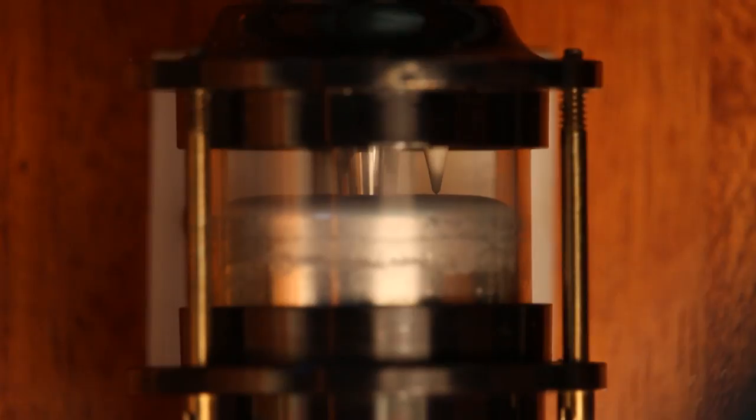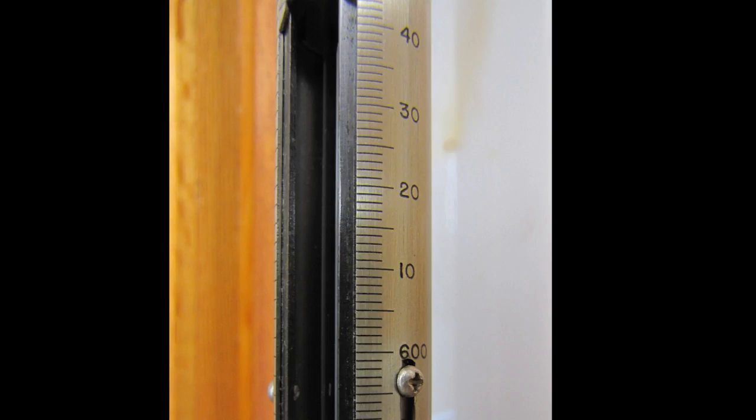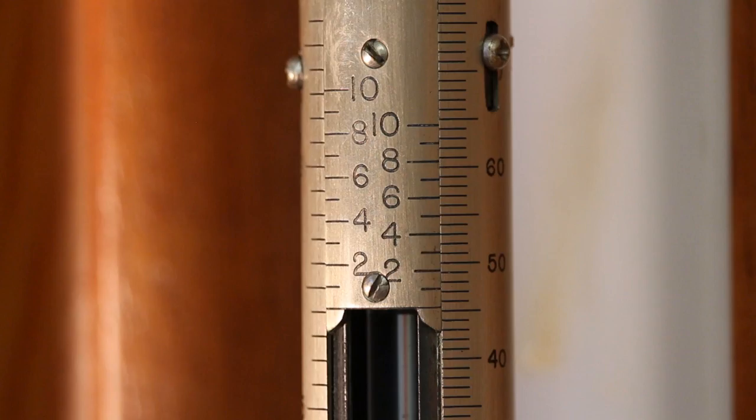Readings are made using gradations on a brass scale. The first three significant figures are read directly from the brass scale: 600 and 45 torr.